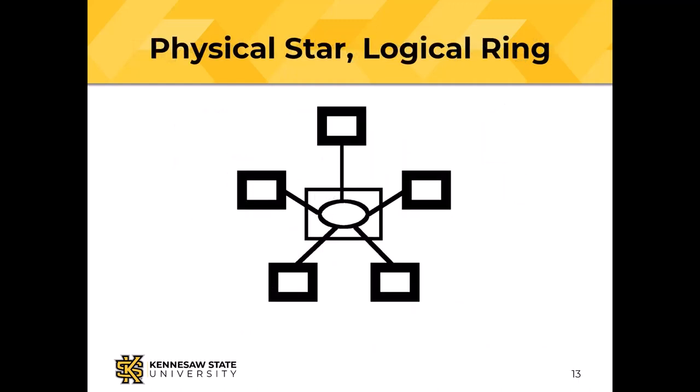A physical star can be a logical ring — the ring exists inside the central device, and each node connects to that ring. However, you do then have a central point of failure.